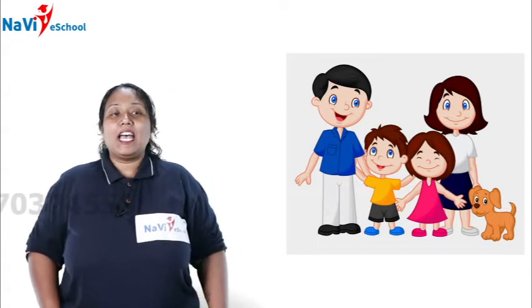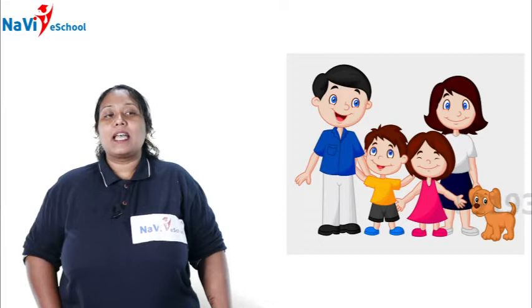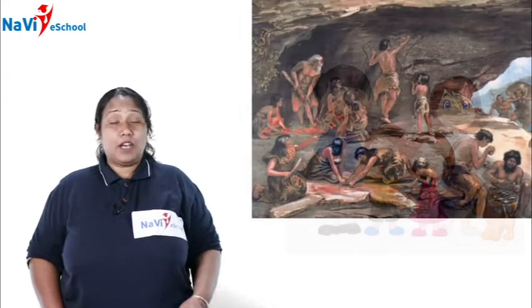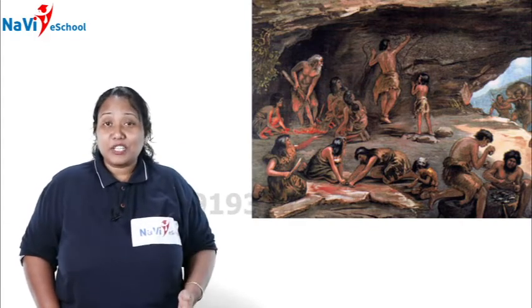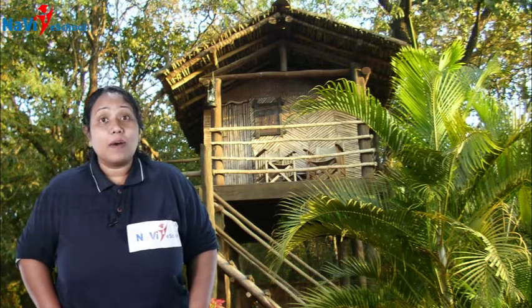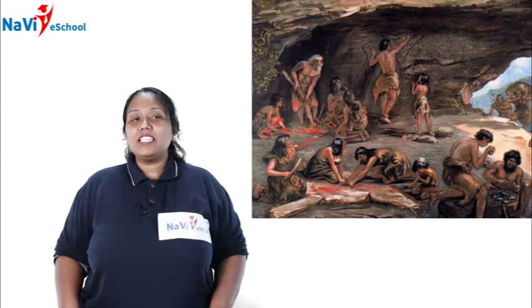Early man protected himself against sun, light, rain, wind, and wild animals by living in caves and bushes. The man used to live in caves and in bushes. Hence, they are called the early shelters of mankind.